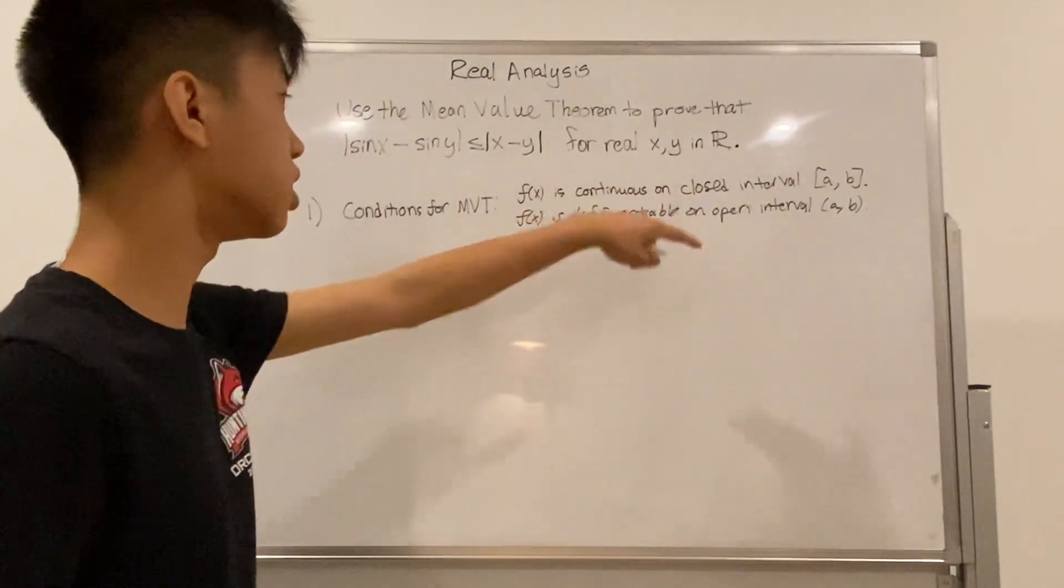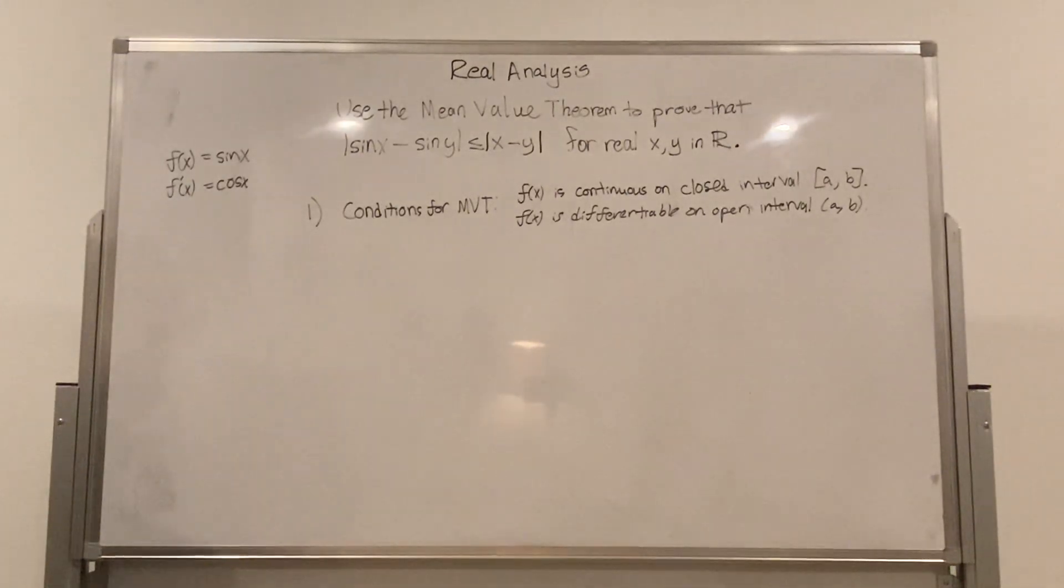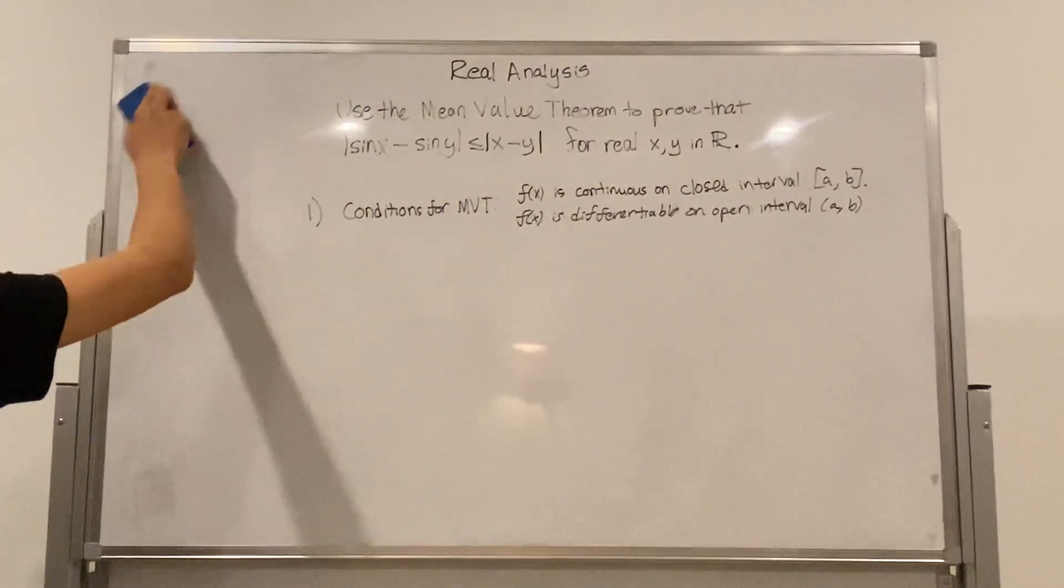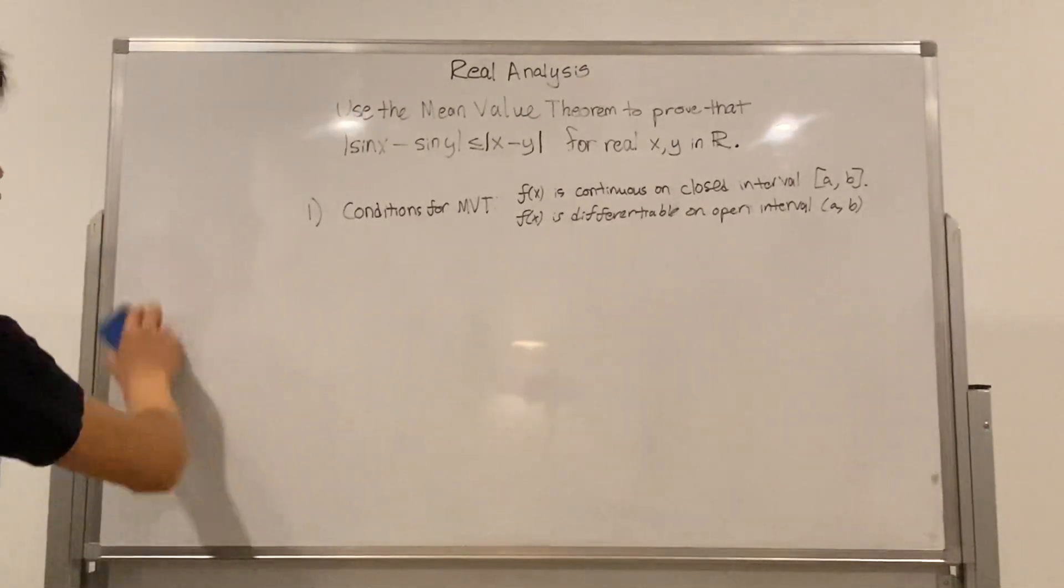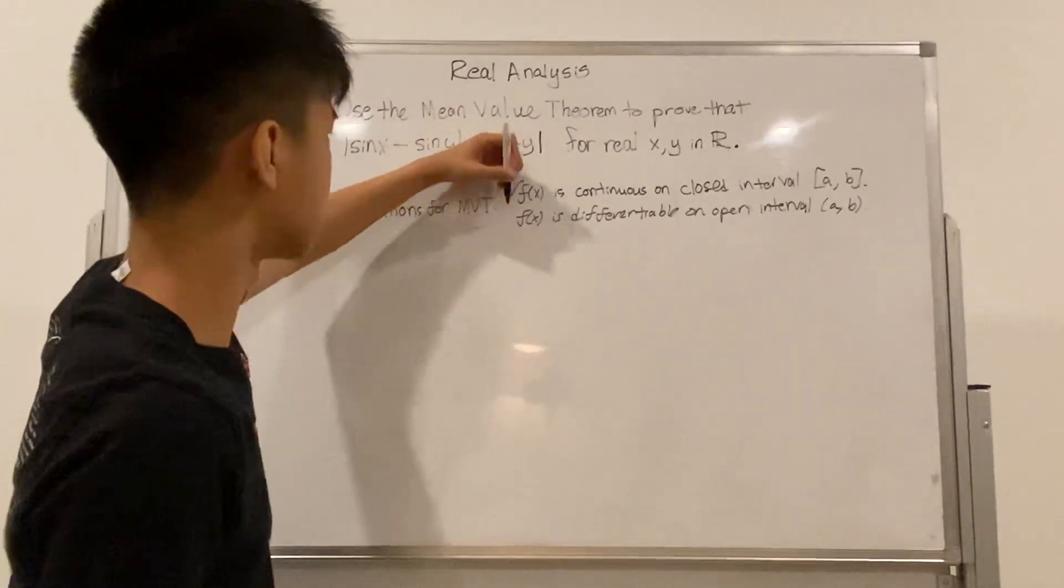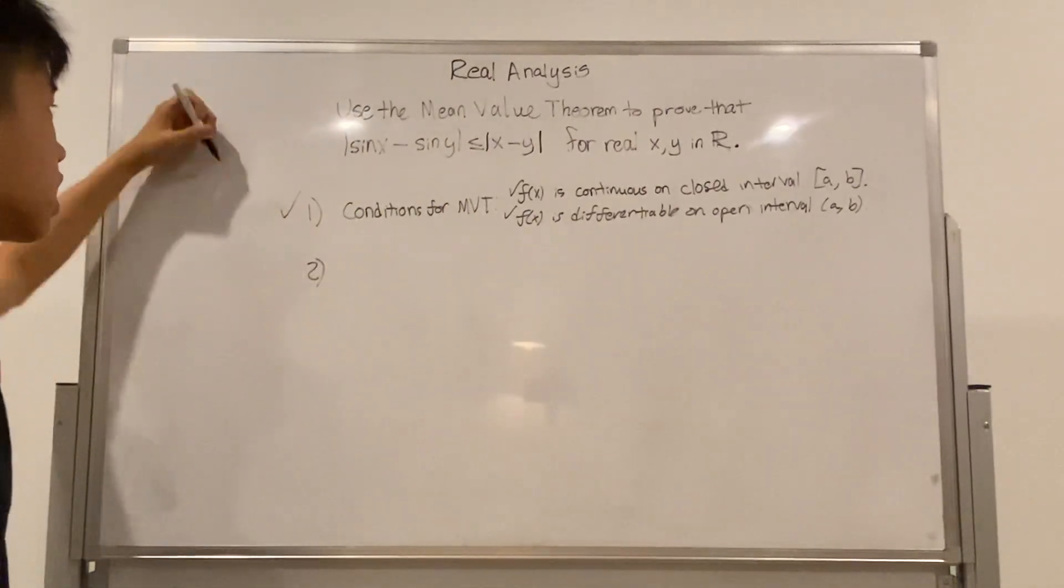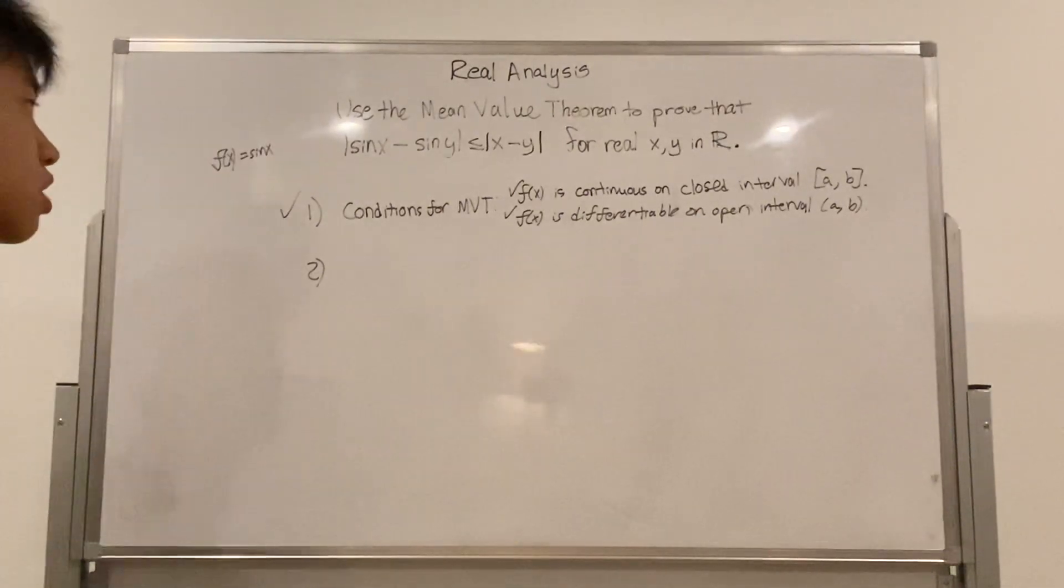And because it is differentiable for all real numbers, it is also continuous and differentiable for these tiny intervals. Since the interval a to b is just a small subset of the real numbers. So this part is checked out and this part is checked out. So we know that sine of x as a function satisfies the conditions needed for the mean value theorem.